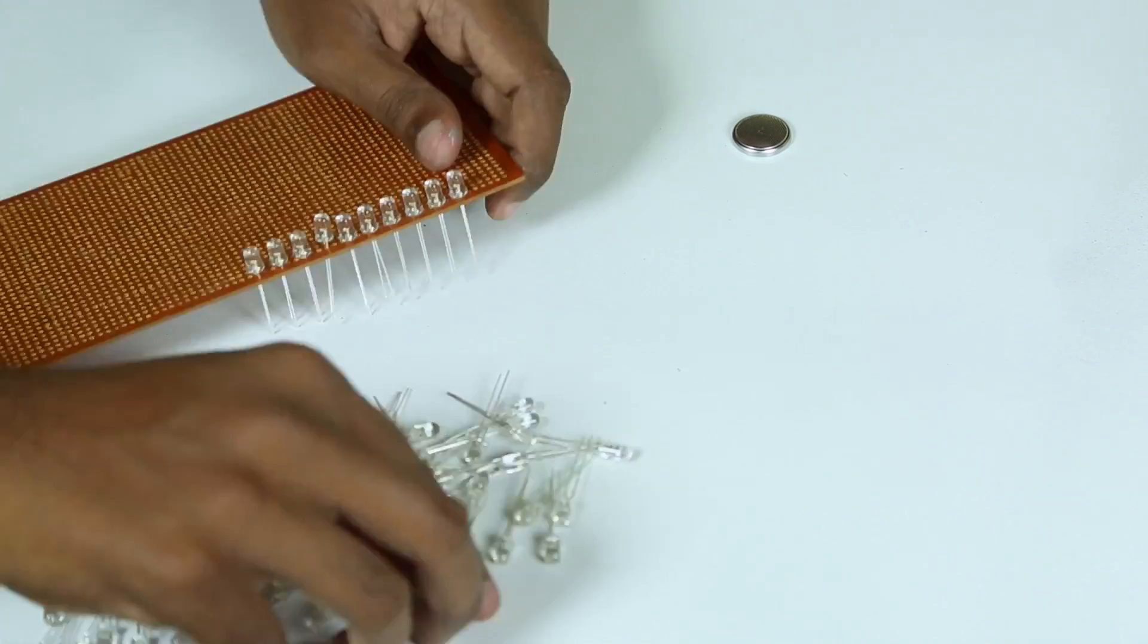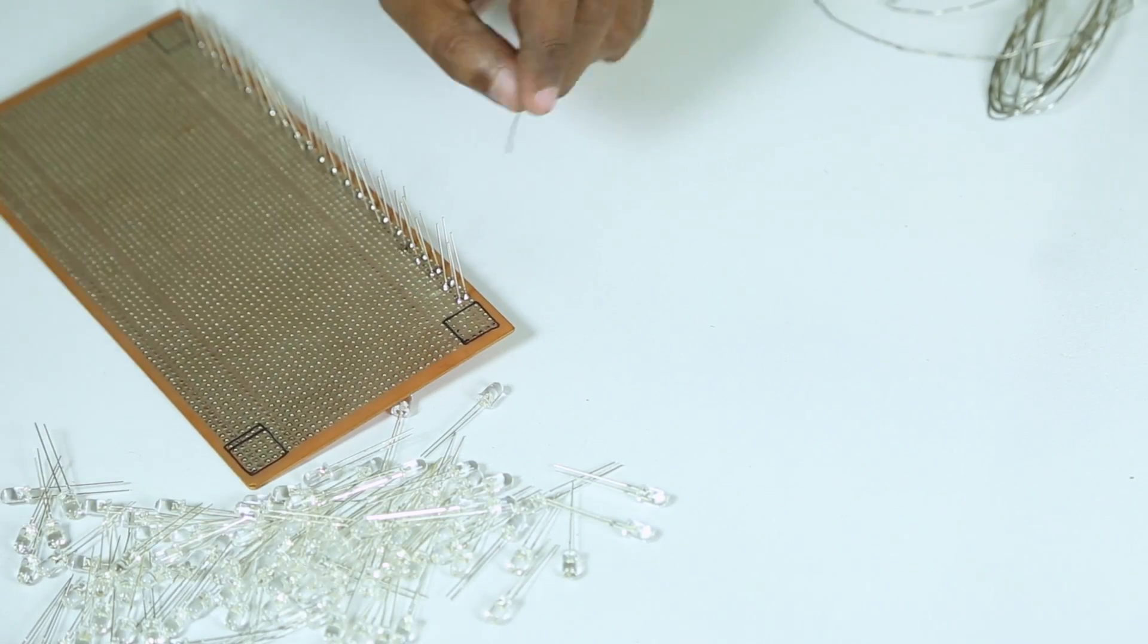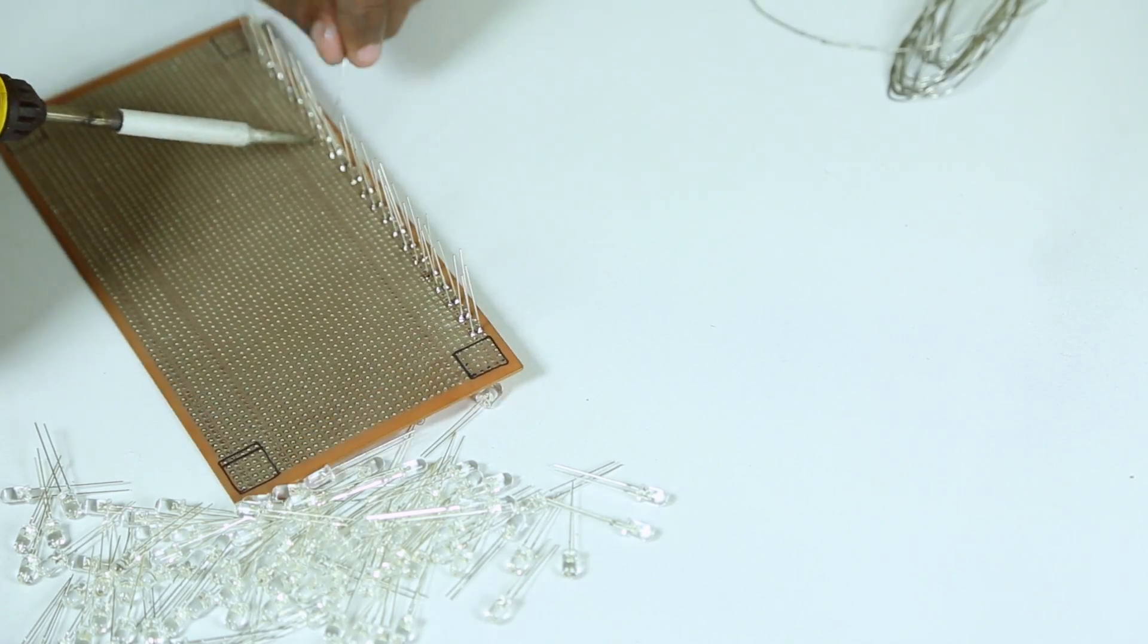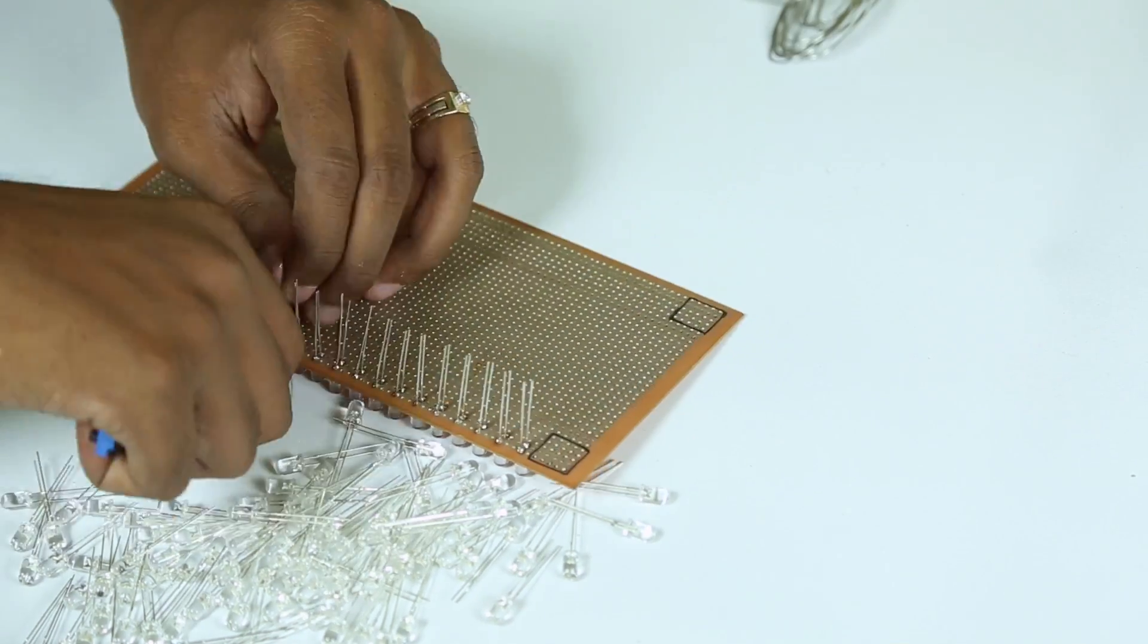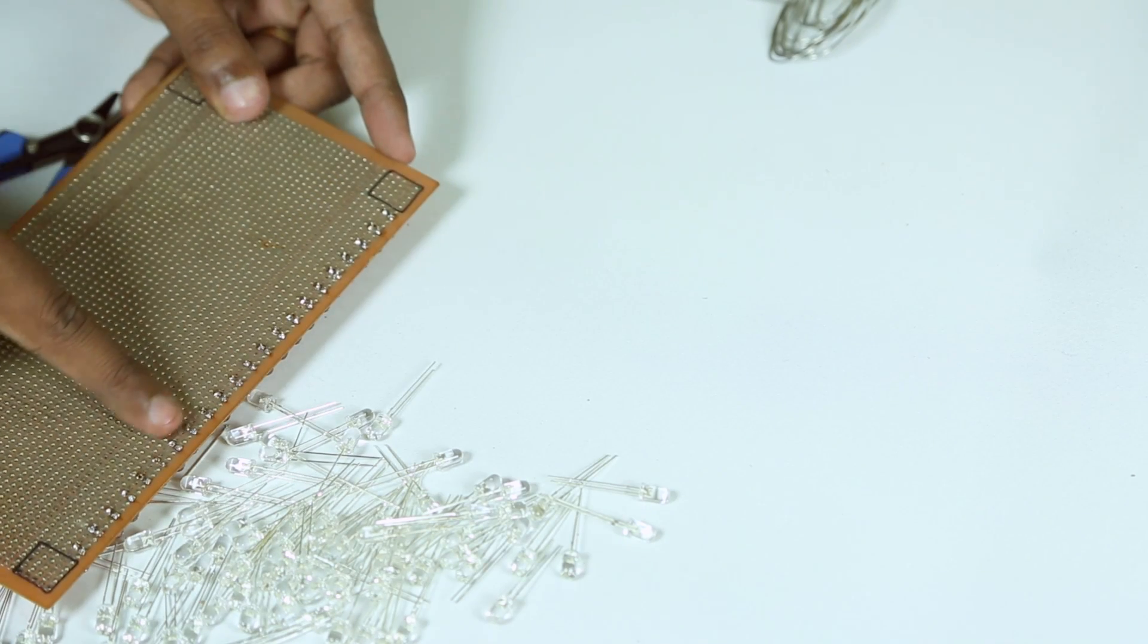After completing each row, I flipped the board over and started soldering just one leg of the LED, then the second leg. And before I start with the next row, I clip off the LED legs so it's easy for handling. Once done, I got a clean row of LEDs.